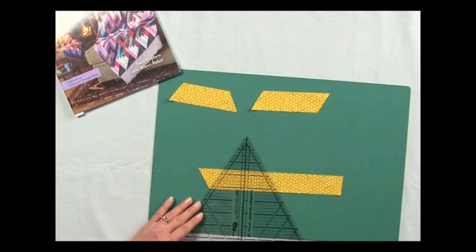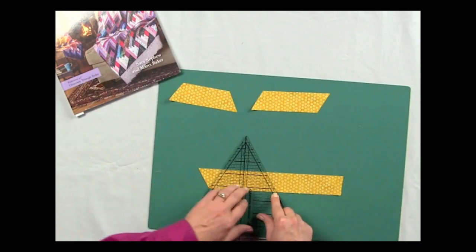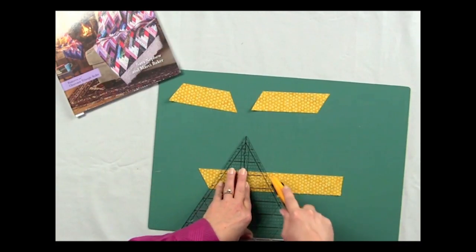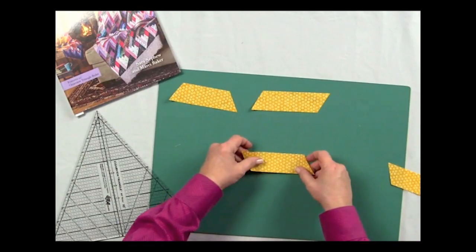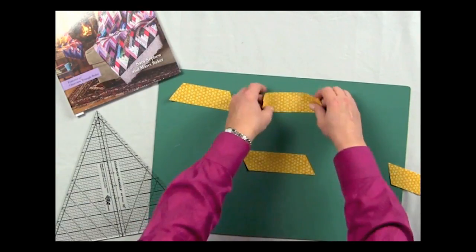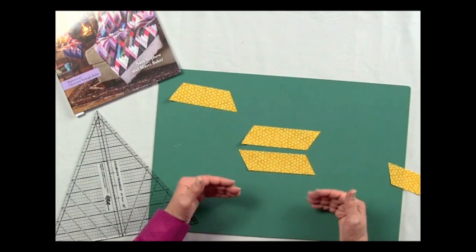We'll have the ruler down here at the bottom with four and a quarter at that corner, and I want to show you the difference. These are both diamond logs, but one leans to the left and one leans to the right. Those are the two shapes that we're going to need for these designs.